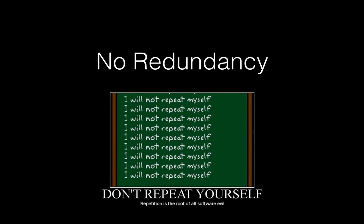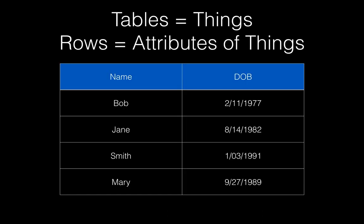If you consider that a database table describes some entity or thing, or a part of an entity or thing — like, say, a person — then the columns of that table should describe the attributes of that entity, like the person's name and date of birth. This divides our table into two dimensions: columns and rows.